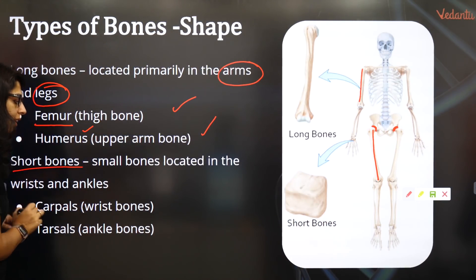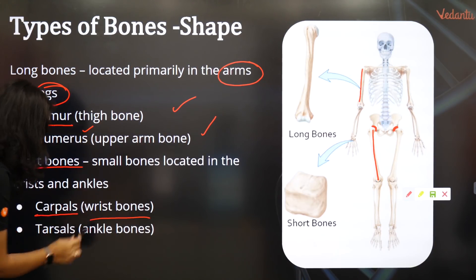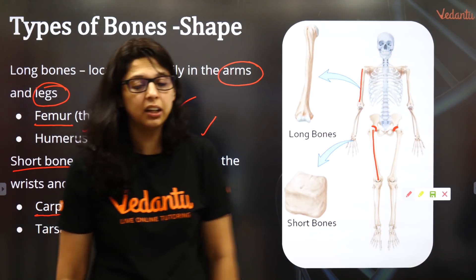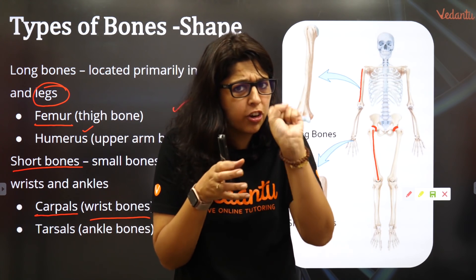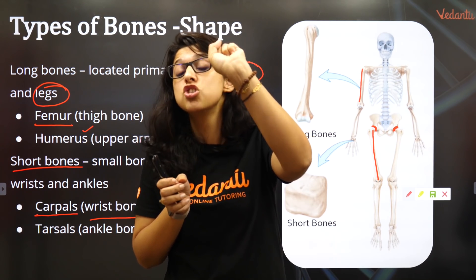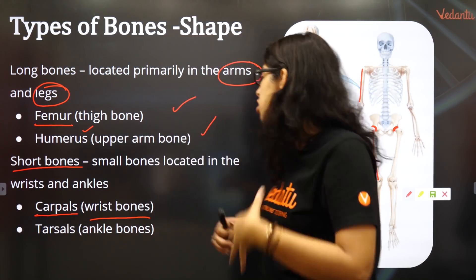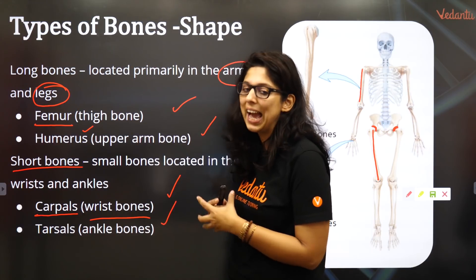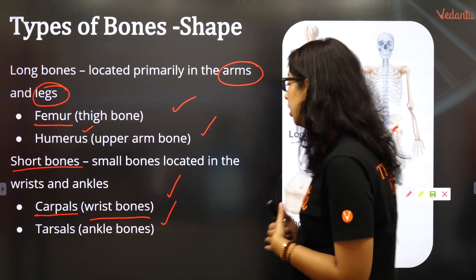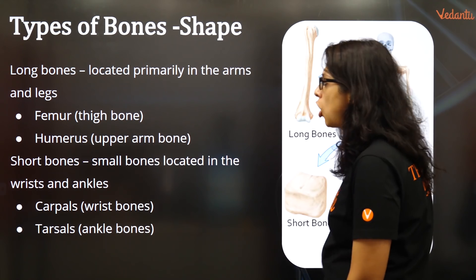Short bones are really small bones. The carpals of the wrist and tarsals of the ankle — it's like an anastomosis, or a group of really small bones, so that they can help you do a lot of movement. Carpals on the wrist and tarsals on the ankle are the short bones.